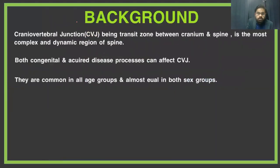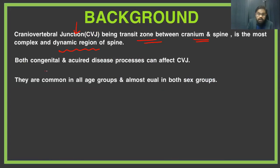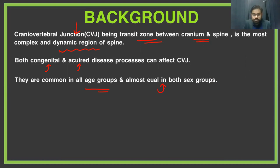As you all know, the craniovertebral junction is the transit zone between the cranium and spine. It is one of the most complex and dynamic regions of the spine, and the anatomy of the CVJ is also a little bit complicated. Both congenital as well as acquired disease processes can affect the CVJ, and they are common in all age groups and almost equal in both sexes.